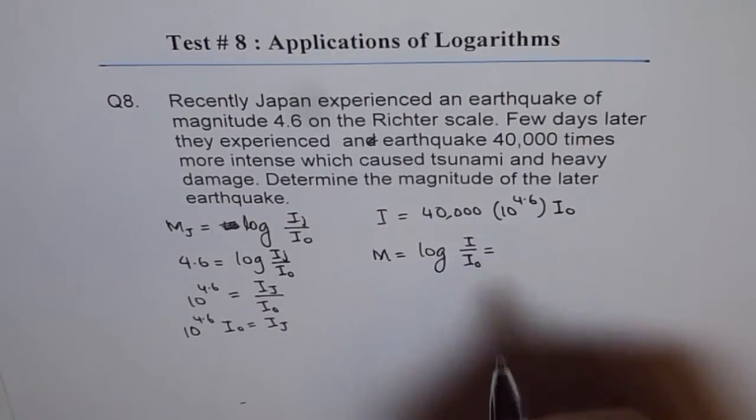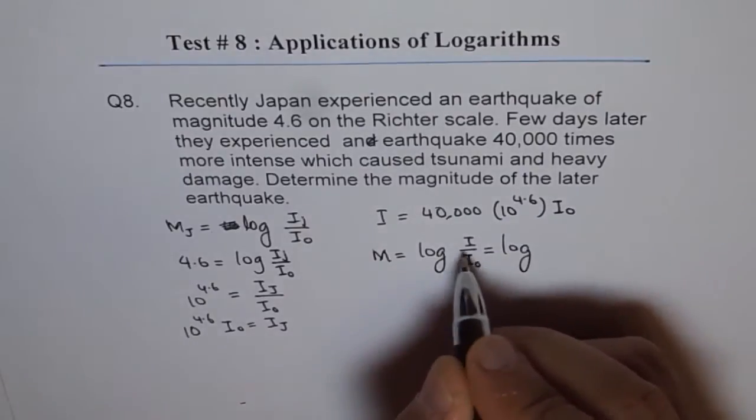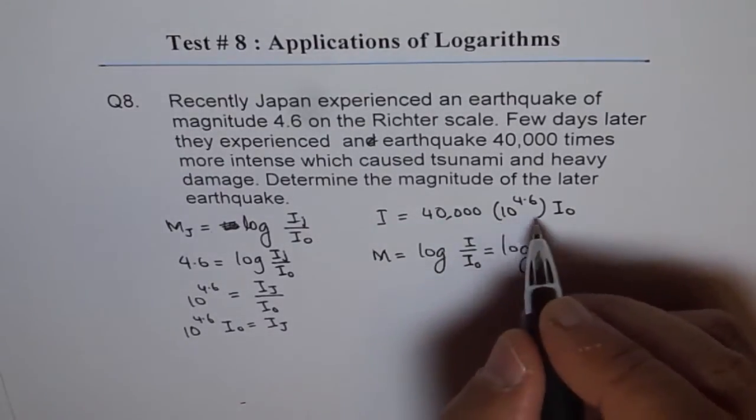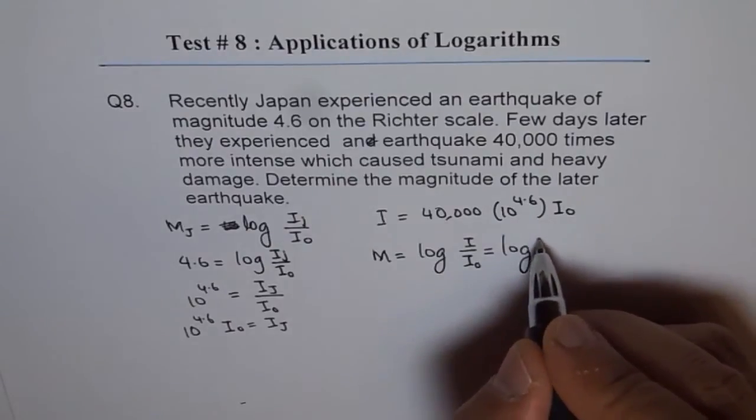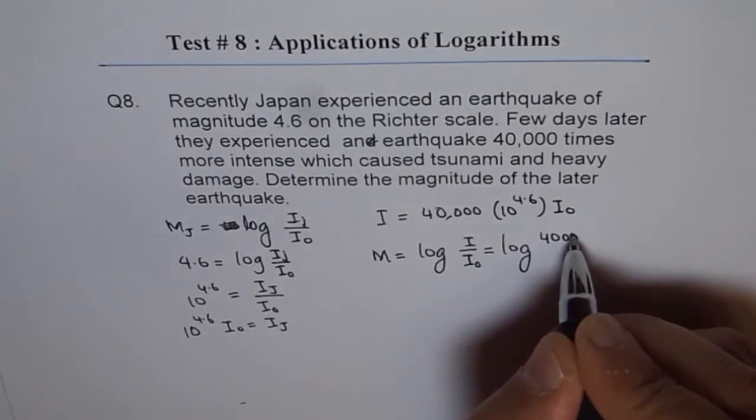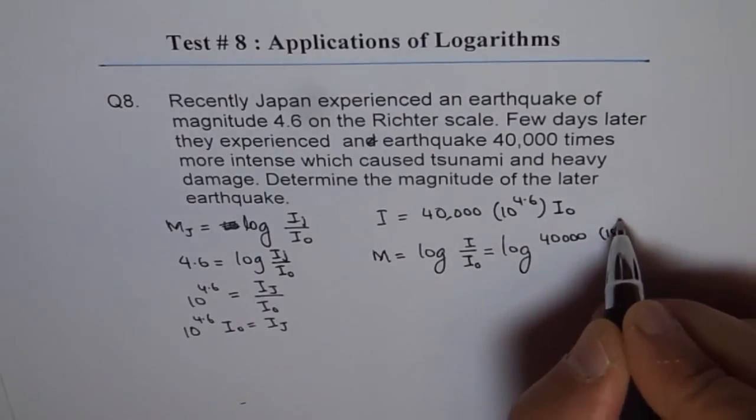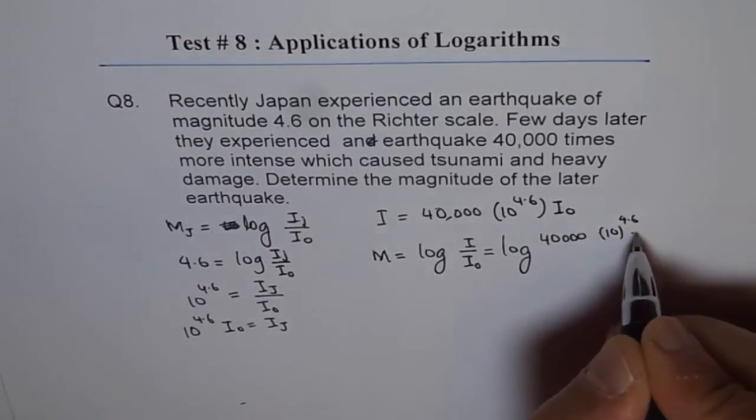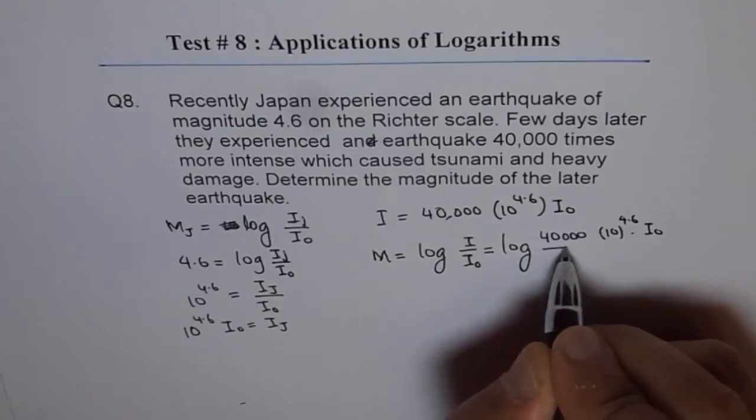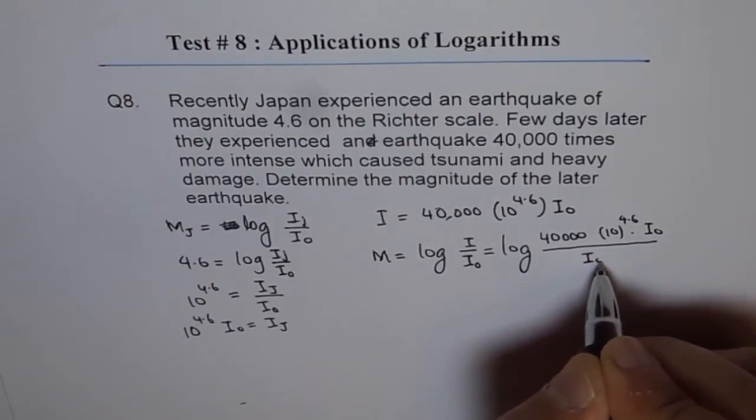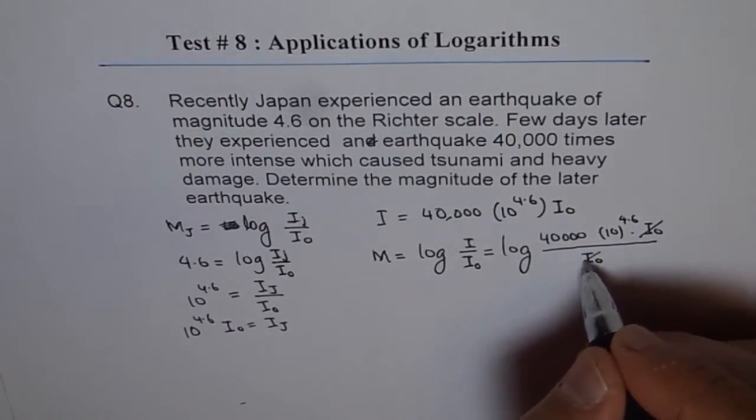Which is log of I, which is 40,000 times 10 to the power of 4.6 times I0 divided by I0. The I0 cancels out.